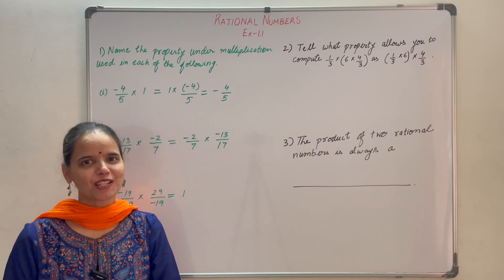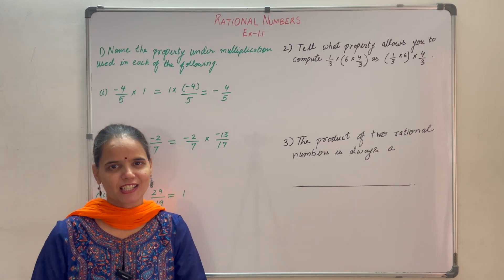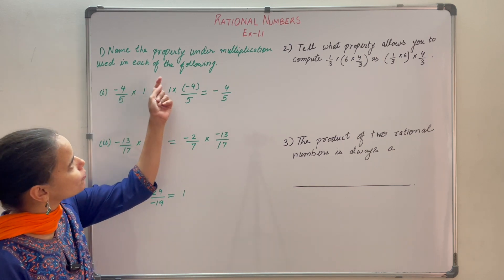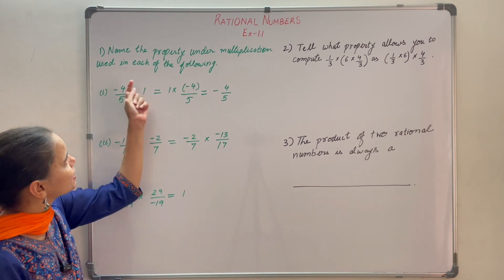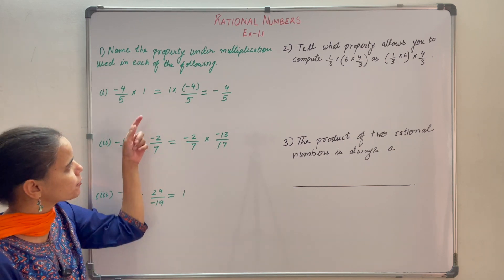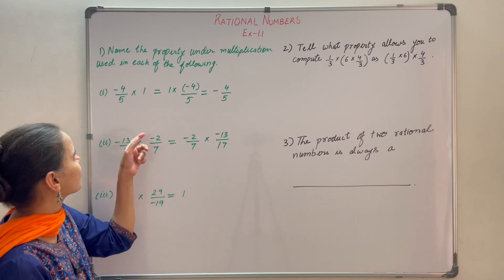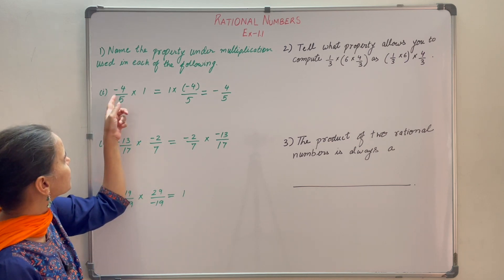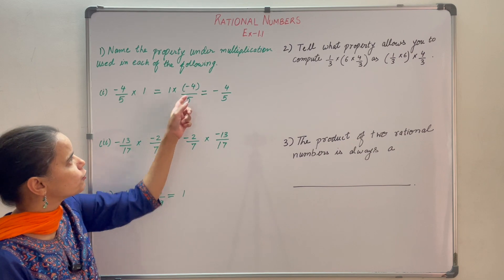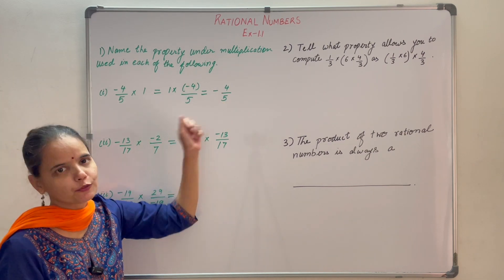Let us now discuss rational numbers exercise 1.1. The first question is: name the property under multiplication used in each of the following. We have to tell which property is used in all three parts. The first part is: minus 4 by 5 into 1 is equal to 1 into minus 4 by 5, which is equal to minus 4 by 5.